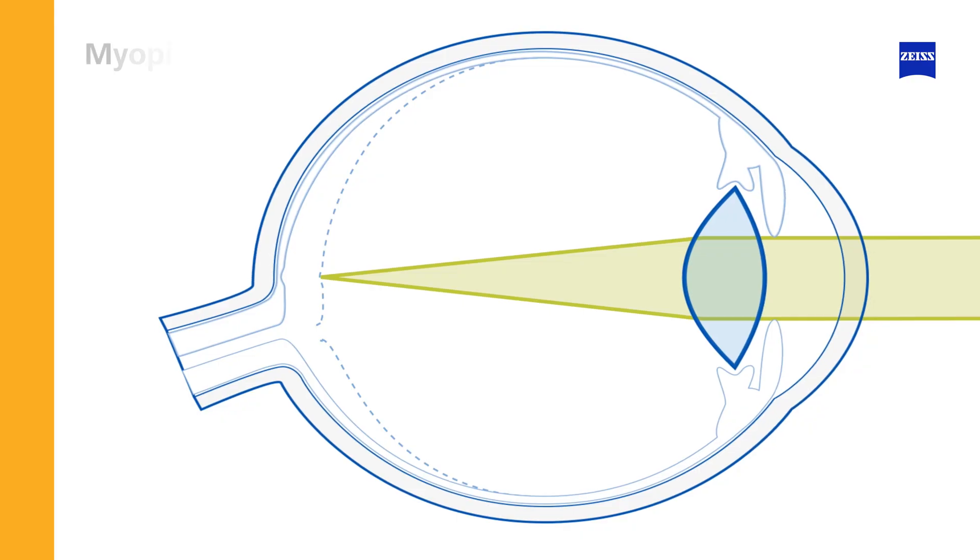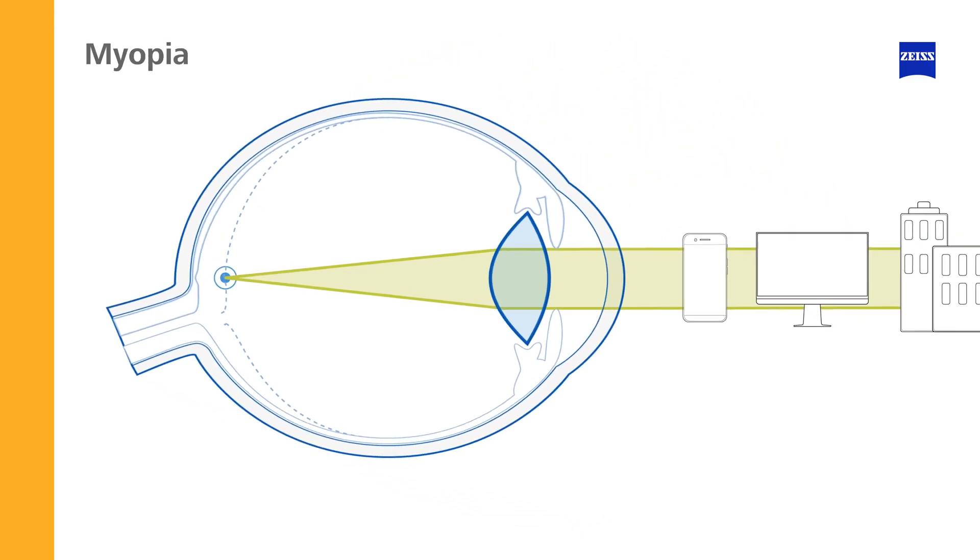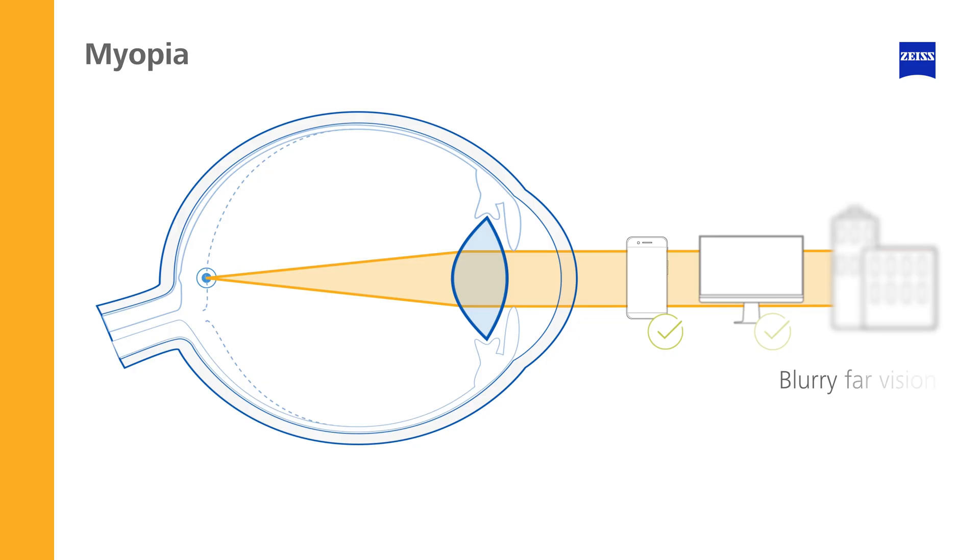If the eye is too long, light rays are focused in front of the retina, causing distant objects to appear blurry. This is called myopia or nearsightedness.